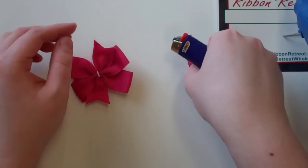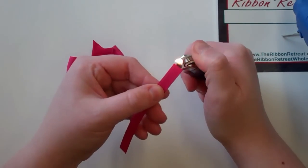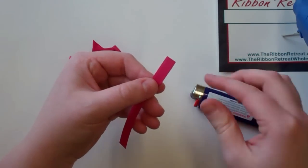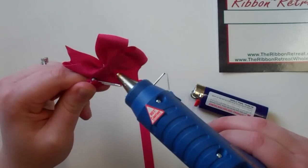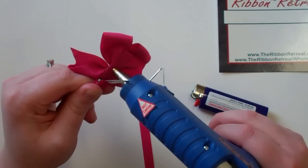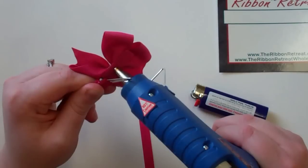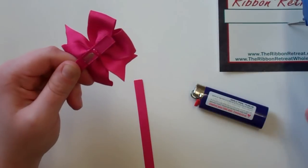I'm going to use my lighter and heat seal one end of the ribbon going around the center. I'm going to open the clip and put a little bit of glue on the inside of the clip.